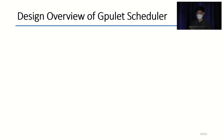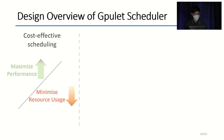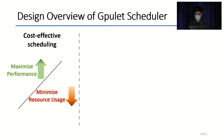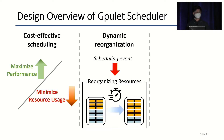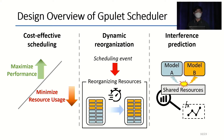The GPU-LED scheduler was designed to achieve three goals. First is cost-effective scheduling: the amount of resource is carefully chosen to yield maximum performance with minimum resource usage. Second is providing scalable dynamic reorganization: the scheduler minimizes the overhead of reorganizing resources due to a scheduling event. Third is to predict potential interference when more than two models execute on shared resources. Due to limited time, we'll skip the interference prediction details — please refer to the paper for more information.